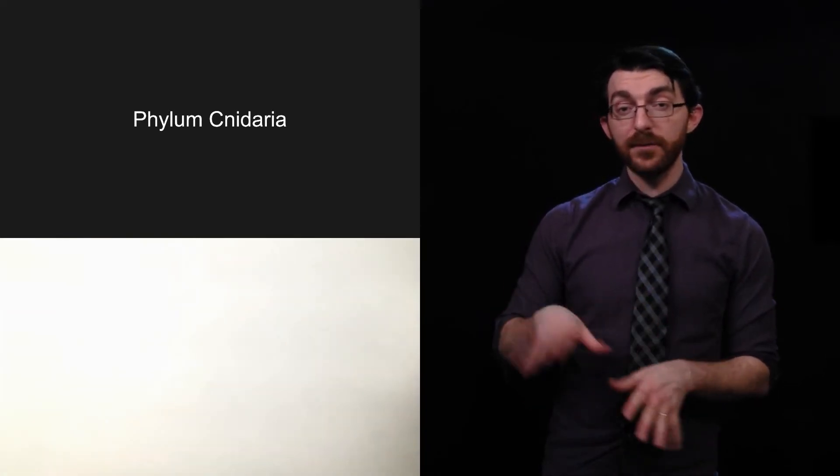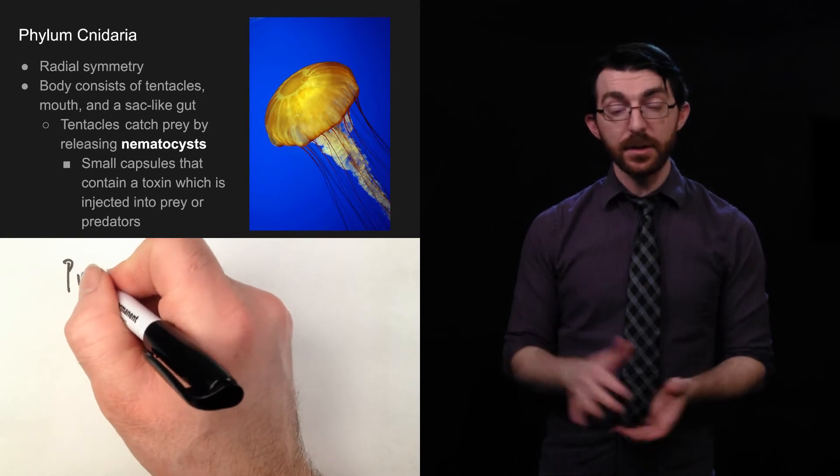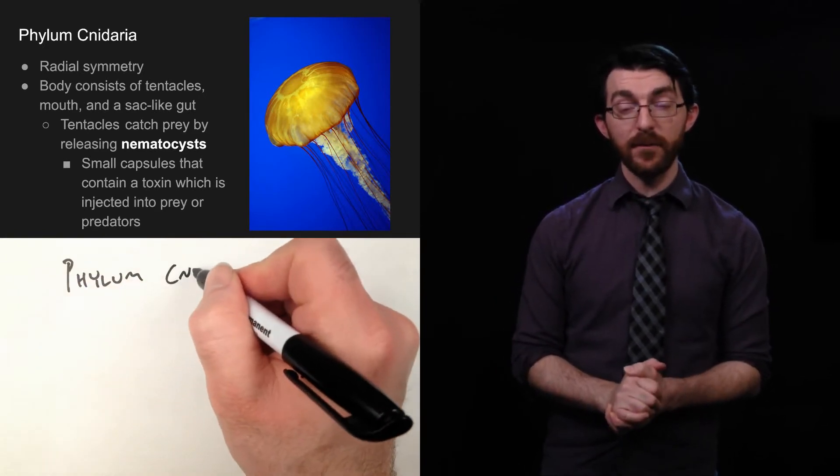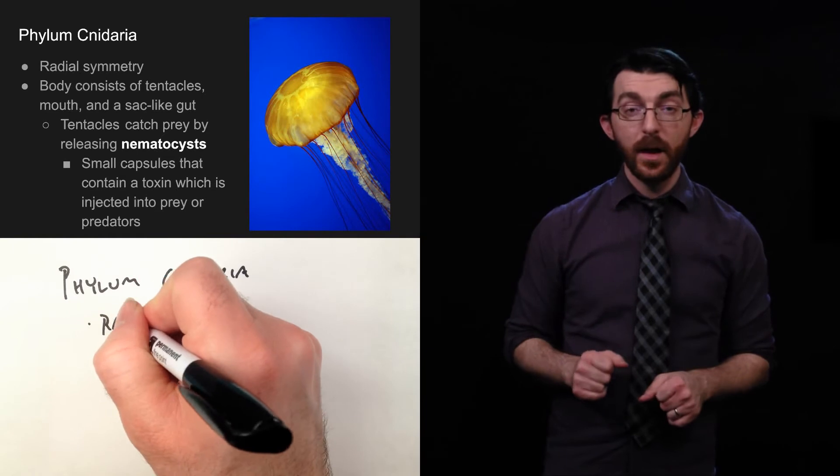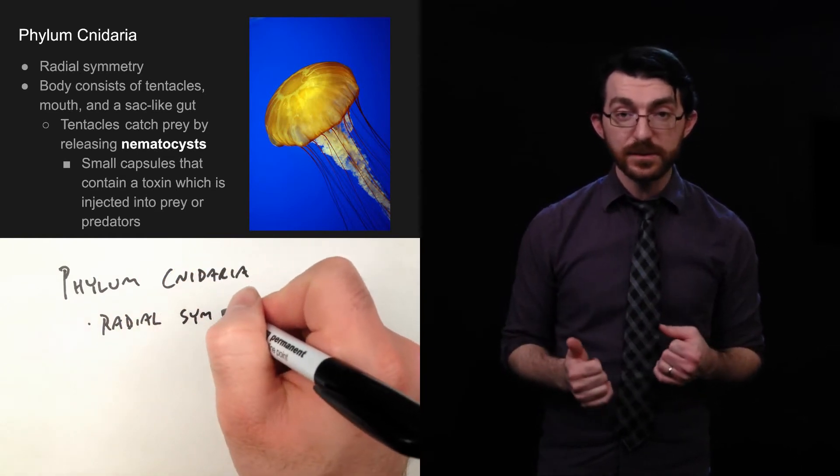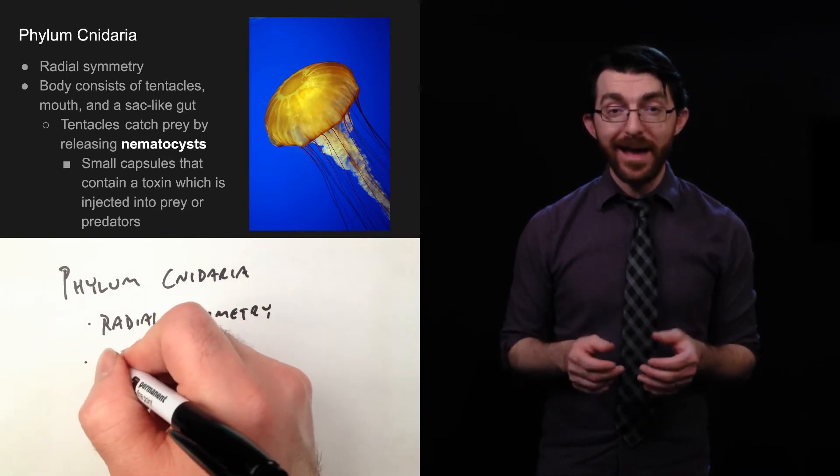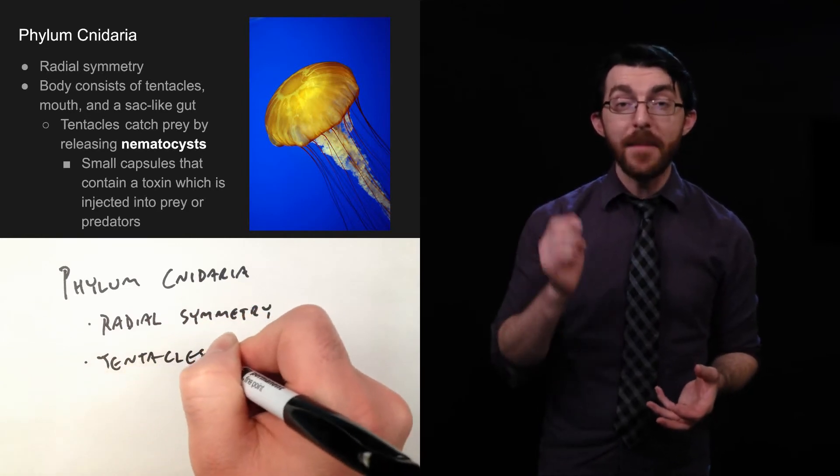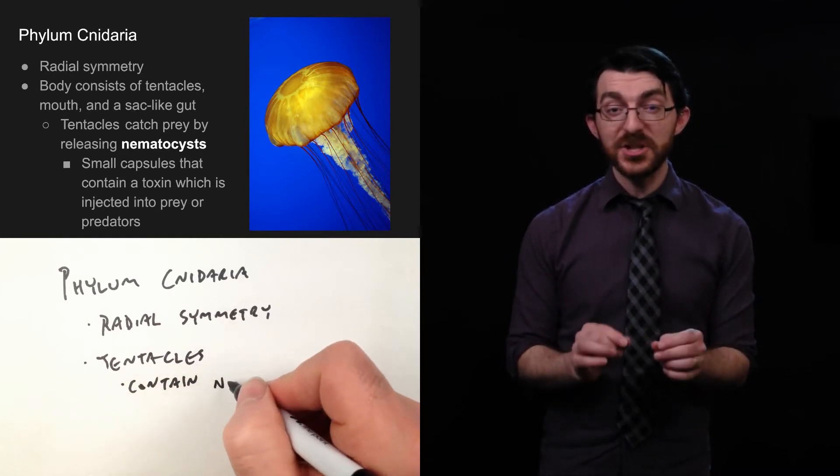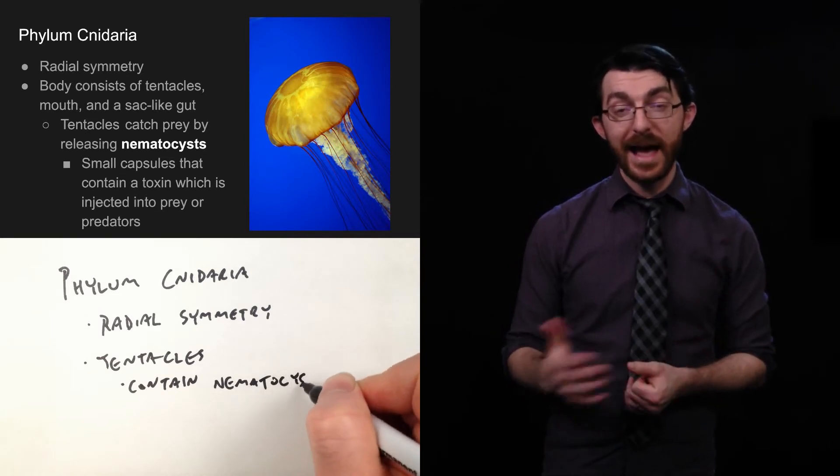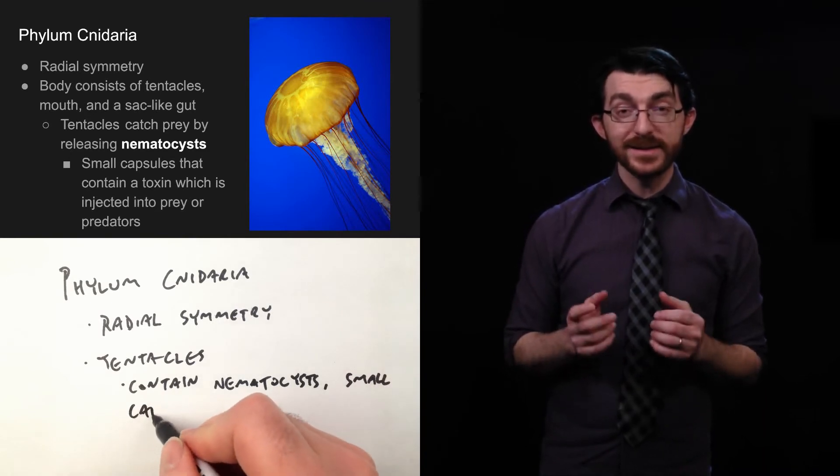So, now, we're going to drift over to phylum cnidaria. Now, this would be jellyfish. They have radial symmetry. So, we went from phylum porifera, which had no symmetry, to phylum cnidaria, which has radial symmetry. Their body consists of tentacles, a mouth, and a sac-like gut. So, they catch prey with their tentacles by releasing something called a nematocyst. These are small capsules that contain a toxin, which is injected into prey or predators, depending on whether it's attacking or defending.